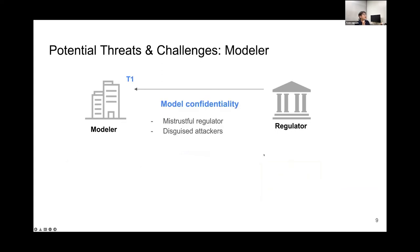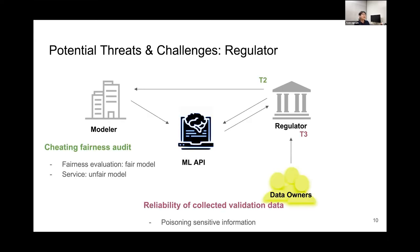Let's look at the potential threats and challenges under this scenario. At the modeler side, the most important problem is model confidentiality. We assume that the modeler does not trust the regulator. So model confidentiality can be broken by a mistrustful regulator or outside attackers. At the regulator side, the regulator does not trust the modeler either. The modeler can cheat the fairness procedure — for example, during fairness evaluation the modeler uses a fair model, but for the actual service they use an unfair model, so the regulator will be cheated.